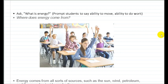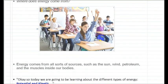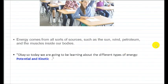I have another question: where does energy come from? Energy comes from all sorts of sources, such as the sun, wind, petroleum, and the muscles inside our bodies. So today we are going to be learning about the different types of energy: potential and kinetic.